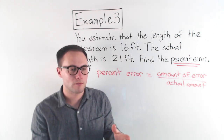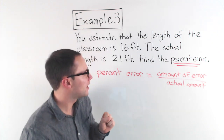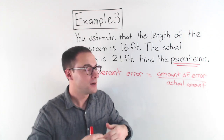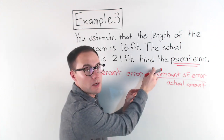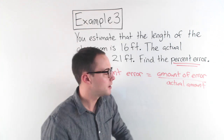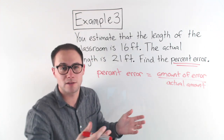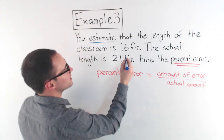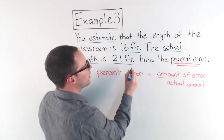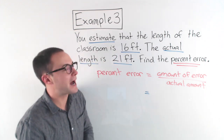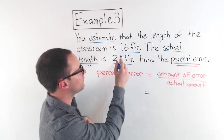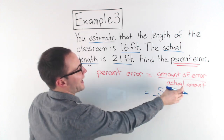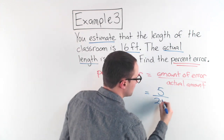The amount of error is always positive — your estimate might be too low or too high, but percent error is always a positive number. The estimate was 16 feet and the actual length is 21. How far off were we? From 16 to 21 we were five feet off — that's our error. The actual amount was 21. So our fraction is five over 21.